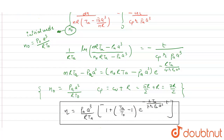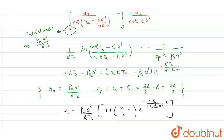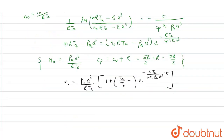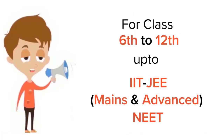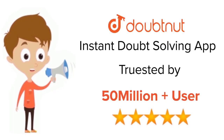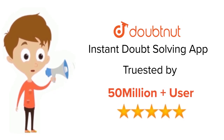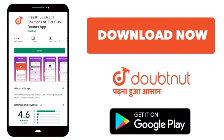So this is the required answer — let me box this equation. Thank you. For Class 6 to 12, IIT JEE and NEET level, trusted by more than 5 crore students. Download DoubtNut app today.